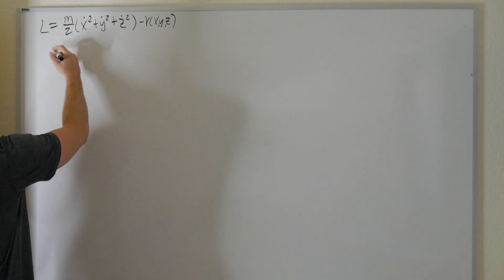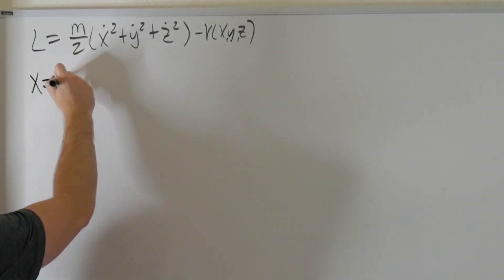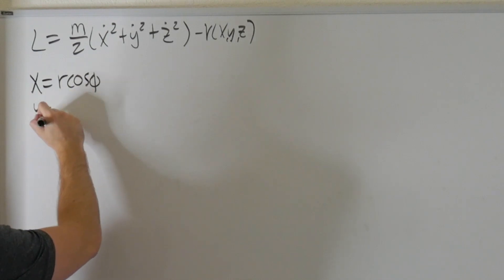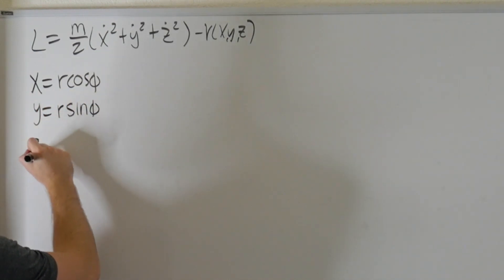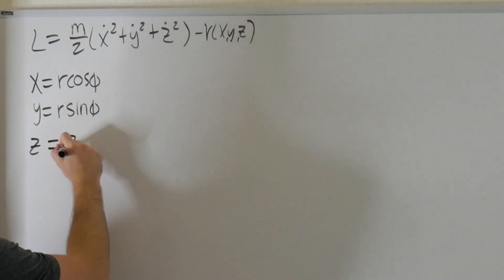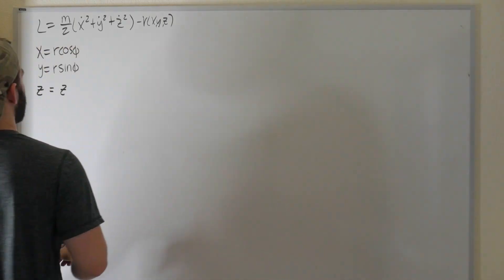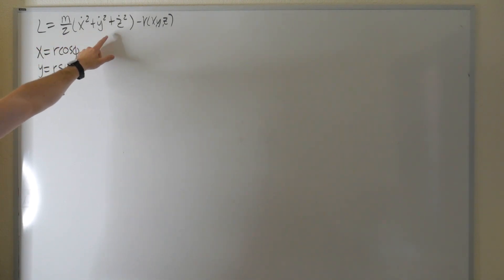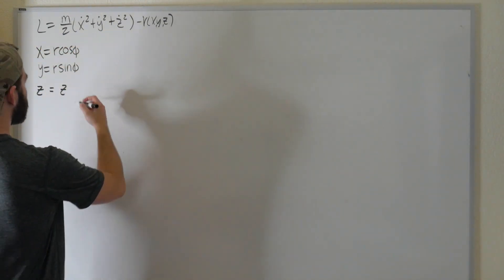First step is to define our cylindrical coordinates: x is equal to r cosine φ, y is equal to r sine φ, and z literally never changes. Now the thing that makes this mostly different from Cartesian coordinates is how we evaluate x_dot, y_dot, and z_dot in terms of our cylindrical coordinates.